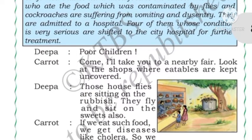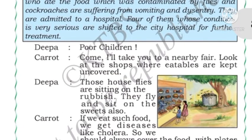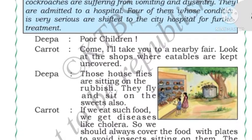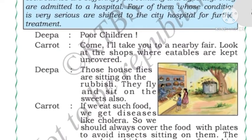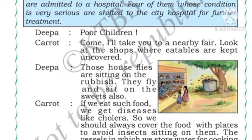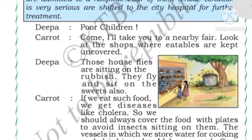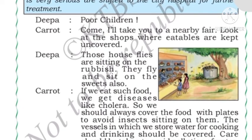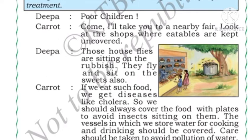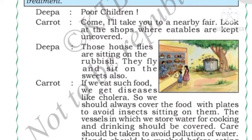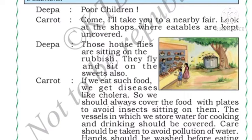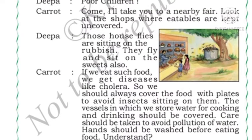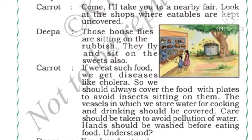Deepa says poor children. Carrot takes Deepa to a nearby fair. In the shops you can see all the eatables are uncovered — not kept covered. Deepa observes that house flies are sitting on the rubbish and then coming to sit on the sweets. Carrot confirms: yes, if we eat such food we will get diseases like cholera. We should always cover food with plates to avoid insects sitting on them. Vessels used to store water for cooking and drinking should also be covered.